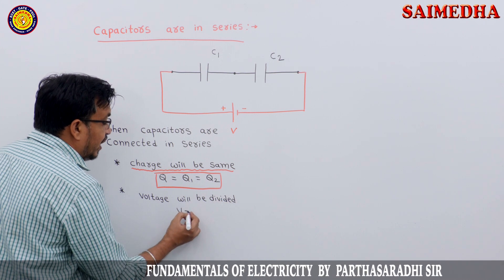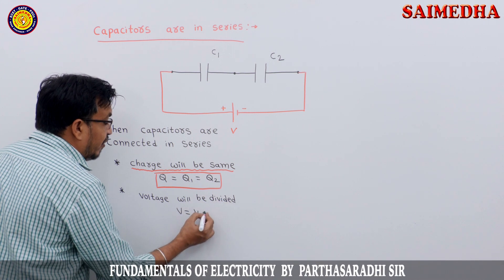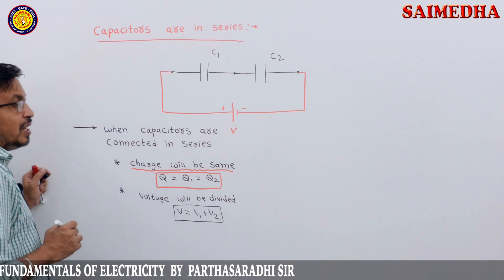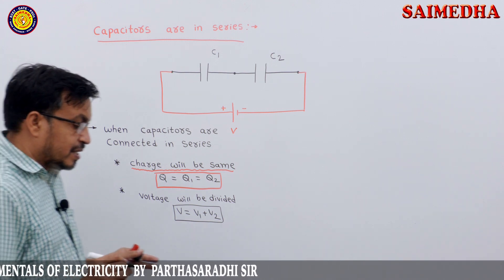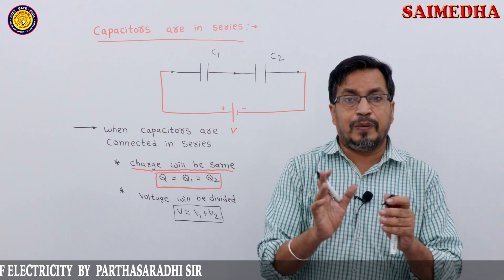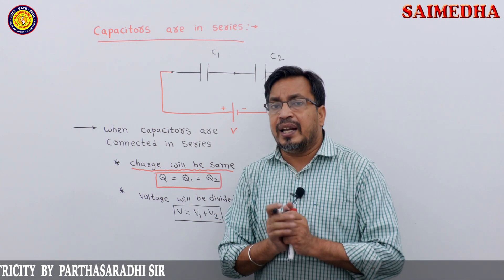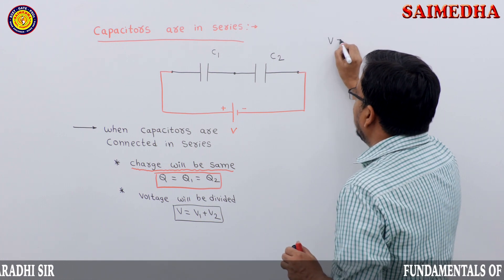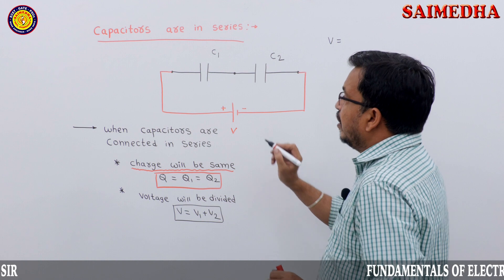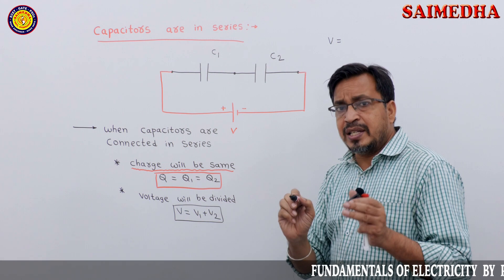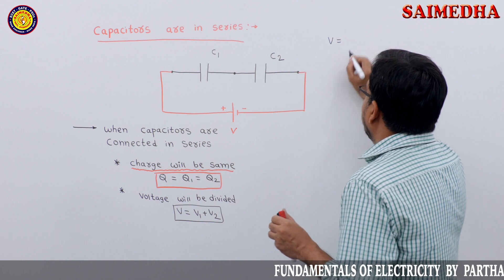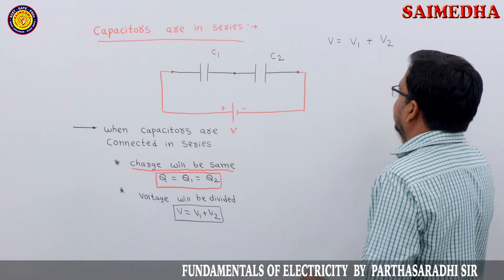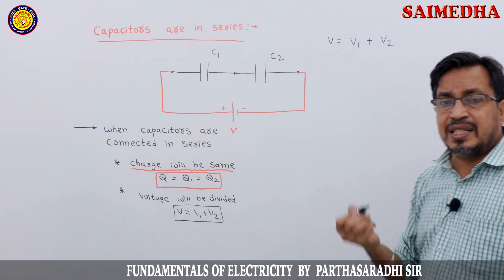Voltage will be the same total applied voltage V equals V1 plus V2. When capacitors are connected in series, charge will be same and voltage will be divided. The applied voltage V equals V1 plus V2, where V1 is the voltage across C1 and V2 is the voltage across capacitor C2.